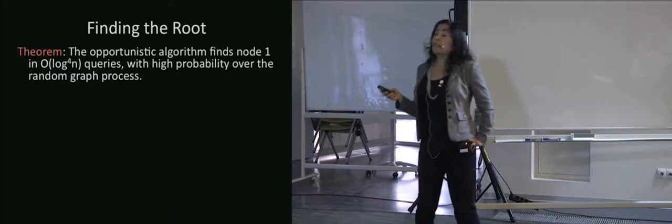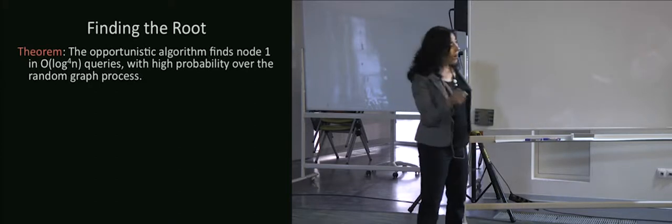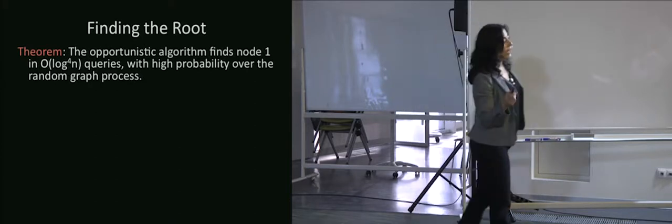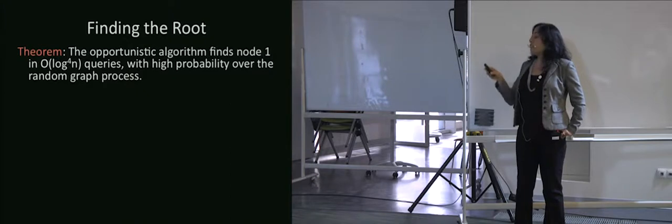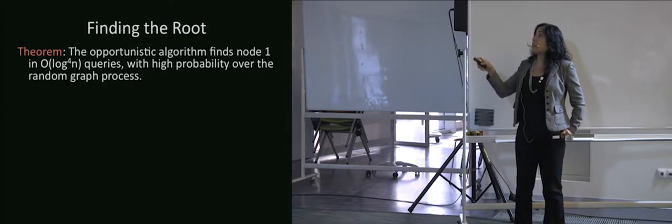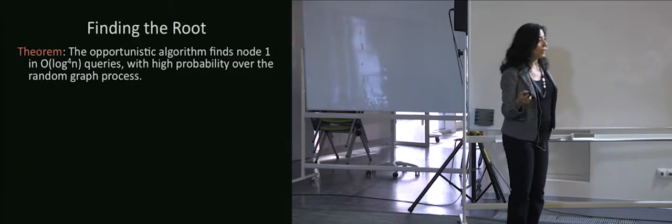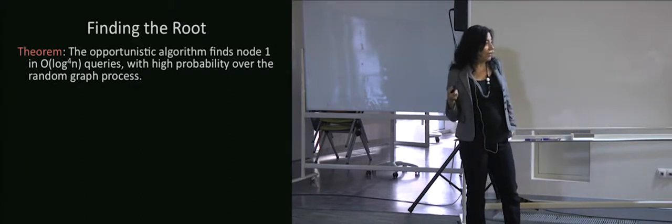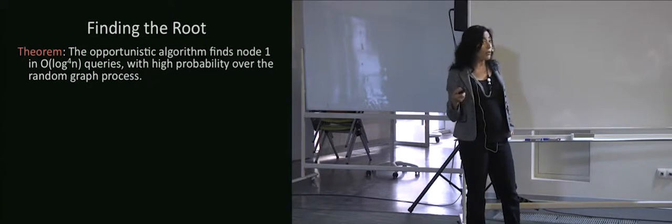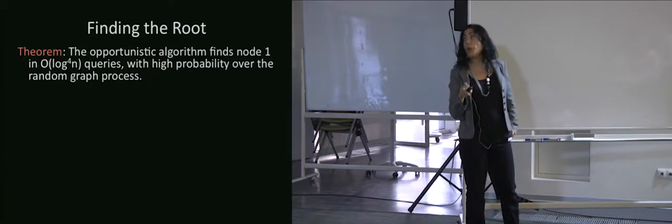It turns out that with a one-local algorithm, you can find the root really quite quickly — log n to the fourth queries with high probability over the random graph, over the preferential attachment process. It's really quite fast.